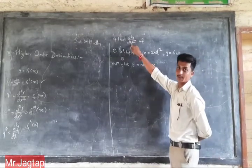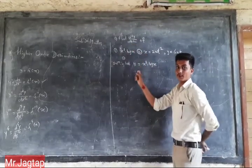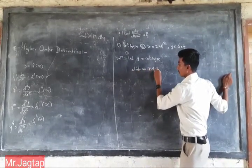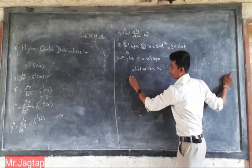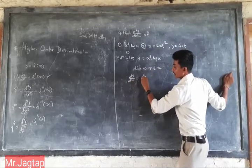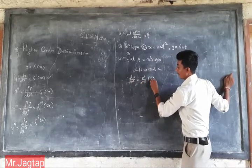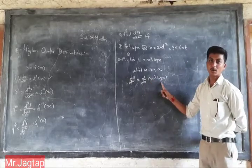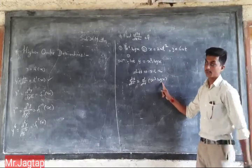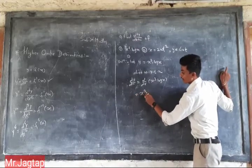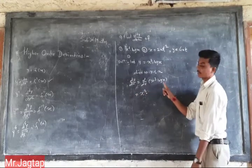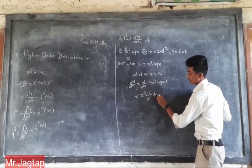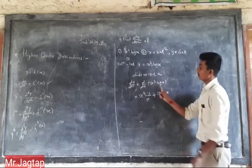Here we have to find the second derivative, so first of all we find the first derivative — differentiate with respect to x. Therefore dy/dx equals d/dx of x-cubed into log of x. Here we have to use the u·v formula: first function taken constant times derivative of second.